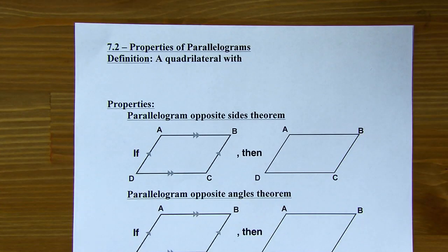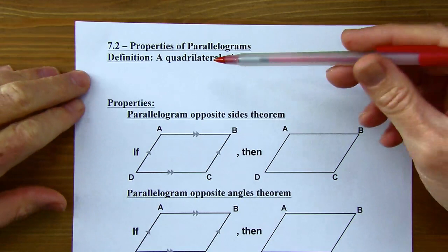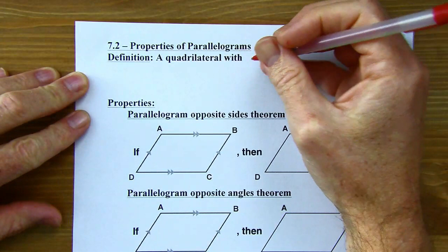Okay, properties of parallelograms. So we've got a definition — I'm defining a parallelogram here. I think you probably already know what it is, but here's the definition. It's a quadrilateral, so it has four sides, and it's going to have two pairs of parallel sides.